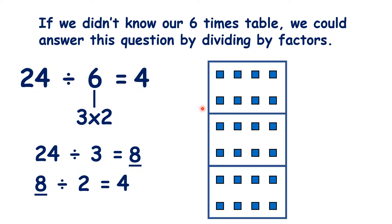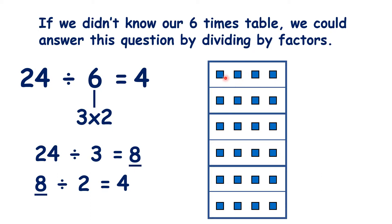And now let's divide each of those groups by 2, like we did here. You can see that by doing this, we now really have our 24 cubes divided into 6 small rectangles. And because we have 4 in each small rectangle, we know that our answer is 4.